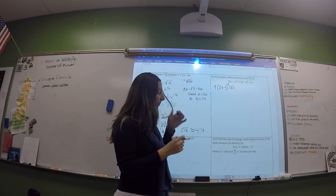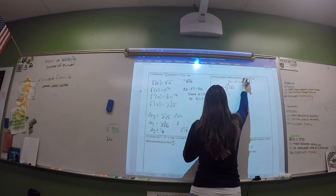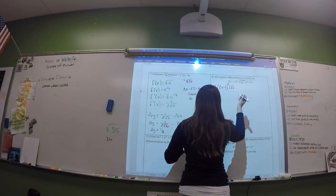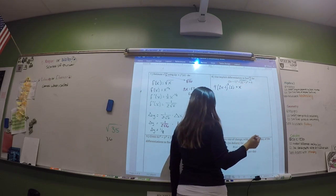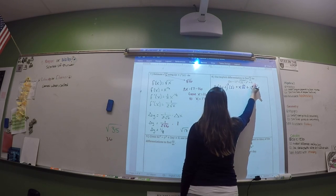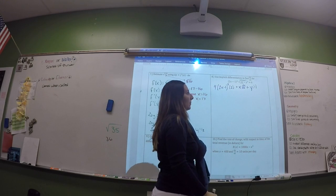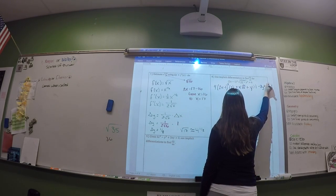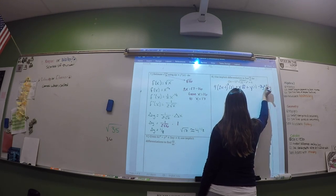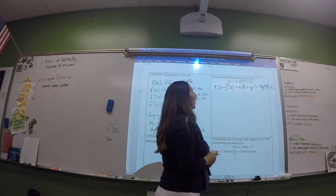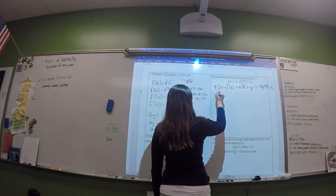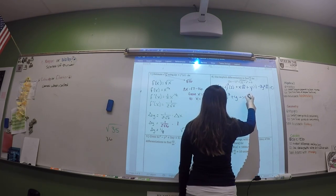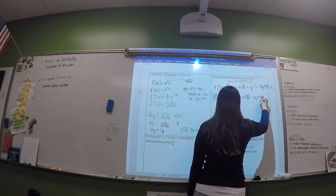The second term has a Y in it and is a product, so use the product rule: first times d(second) plus second times d(first). That gives X times dy/dx, plus Y times 1. The third term is a Y term: differentiate it and then attach a dy/dx. The derivative of a constant is 0. Now clean up: factor out dy/dx from the Y-containing terms, keeping them on the left; move everything else to the right.